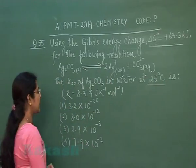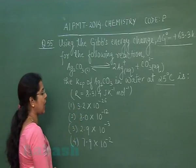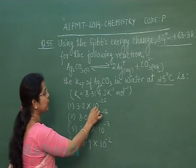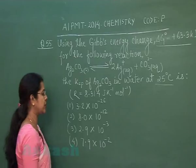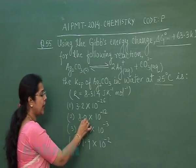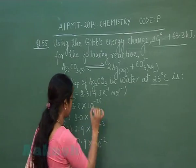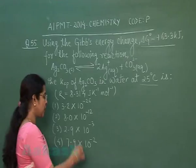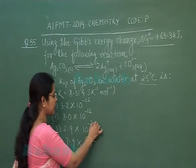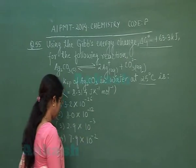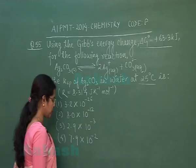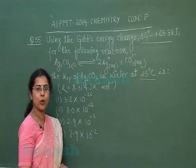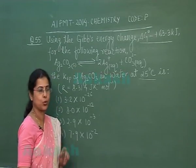The four options given are: 3.2 × 10⁻²⁶, 8.0 × 10⁻¹², 2.9 × 10⁻³, and 7.9 × 10⁻².